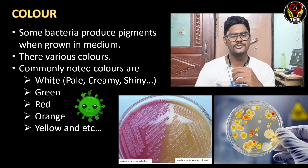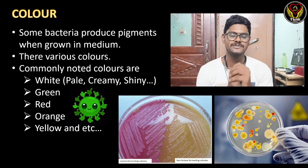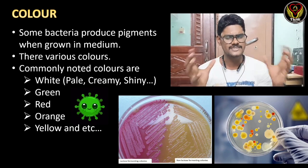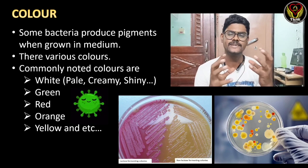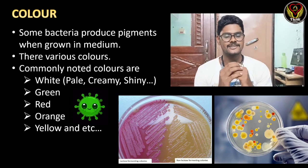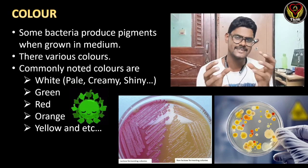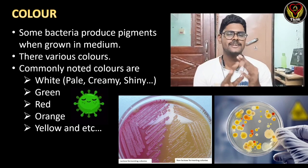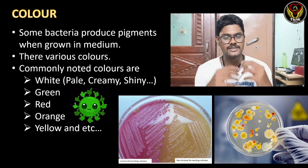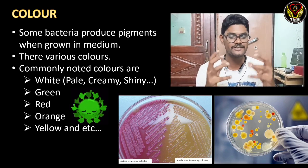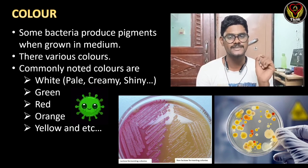Next is color. Some bacteria produce different pigments when grown in different media, so there are various colors. Commonly mentioned colors include white — with different gradients like pale white, creamy white, shiny white, and dull white — as well as green, red, orange, and different shades of yellow. Observing color is also an important part of colony morphology identification.